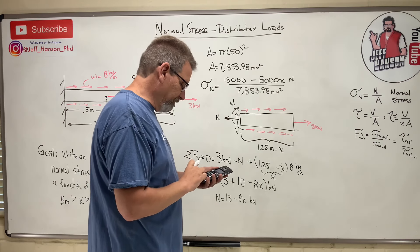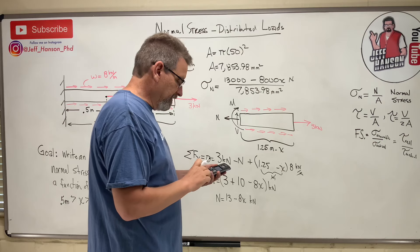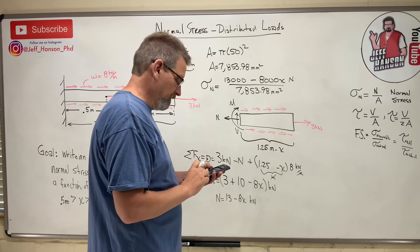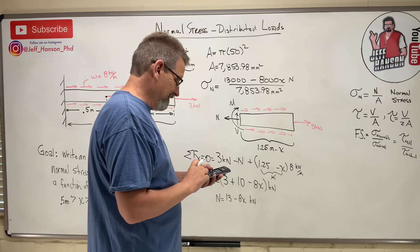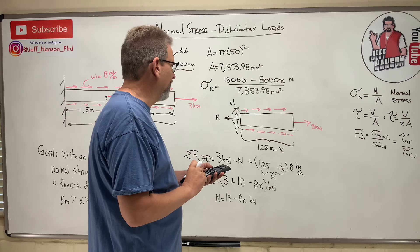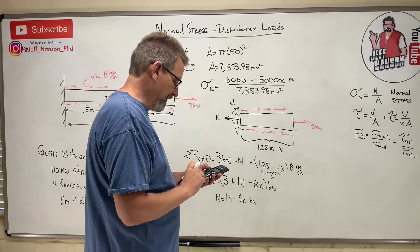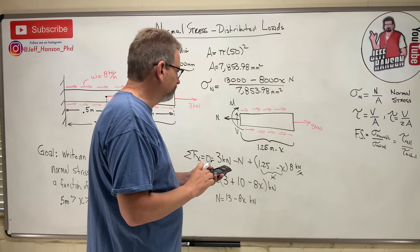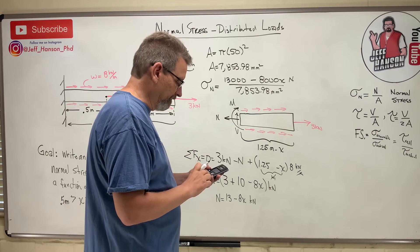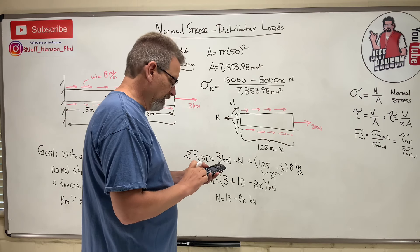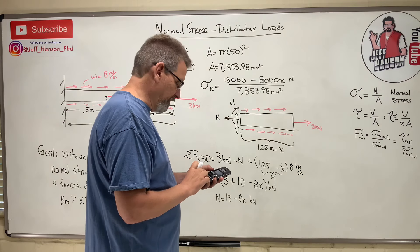So 13,000 divided by 7,853 minus 8,000 divided by, oh, let's just do that. Wait a minute. Let's just do that. 13,000 divided by 7,853.98.